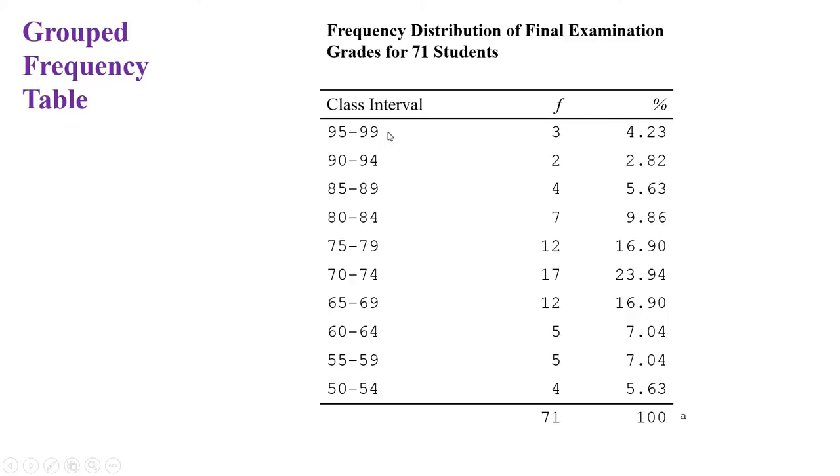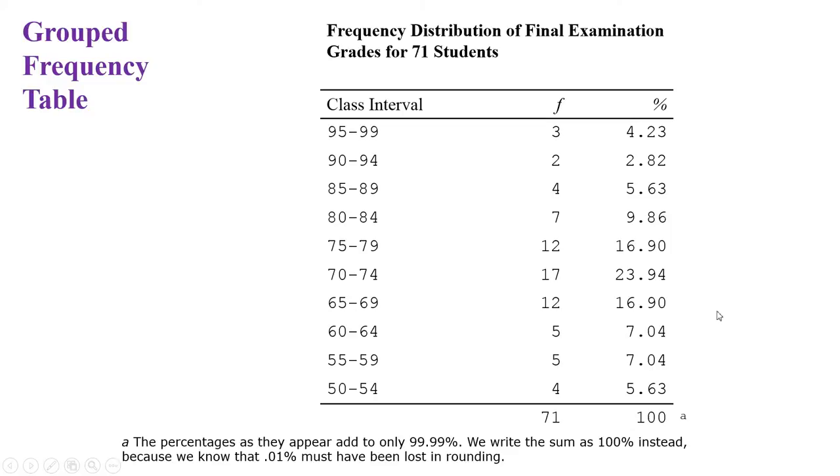So that's the information you lose with a grouped frequency table. You lose where the information was inside the interval, inside the bin or the category or the range. There's a little note that isn't all that important. So let's look at some SAT scores and do another grouped frequency distribution.